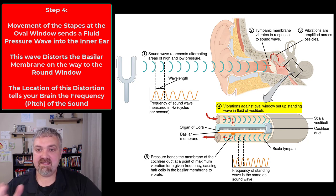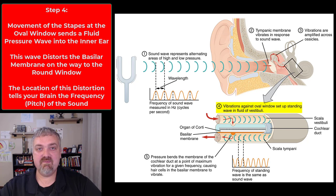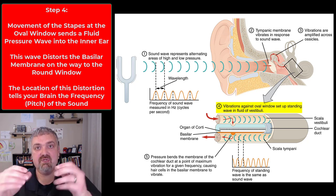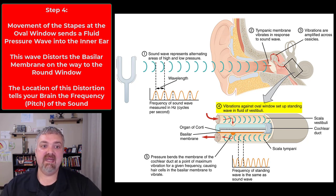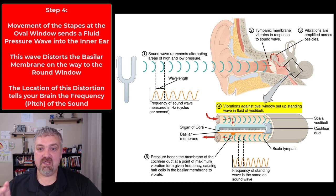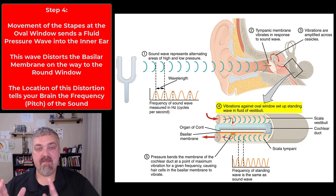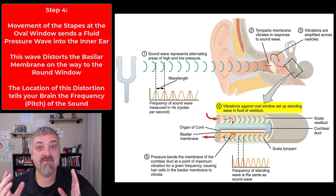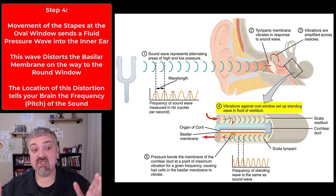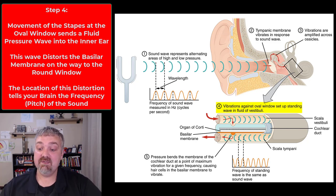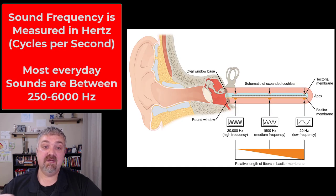In step four, the stapes has moved the oval window and sent a wave traveling through it, kind of like pushing water in a pool. The location where the maximum amount of distortion occurs is actually how we determine the frequency or pitch of a sound.